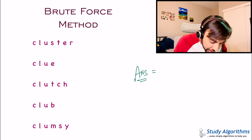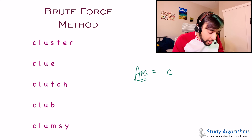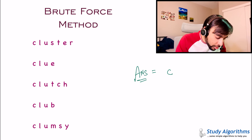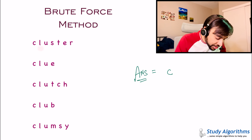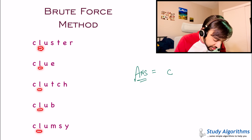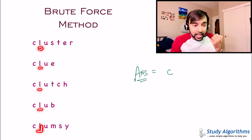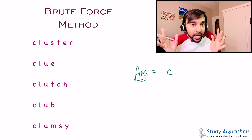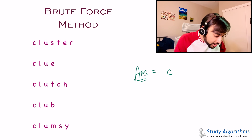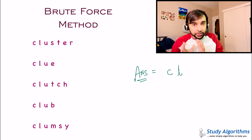First, you caught the letter C. Next, what you will do is move on to the second letter. This time you see L. You start to check if L exists in all the other strings. You can find an L everywhere. And hence, this will also be a part of my longest common prefix. So I will add L. So far so good?